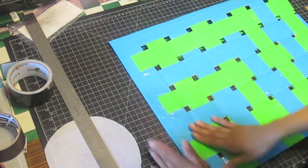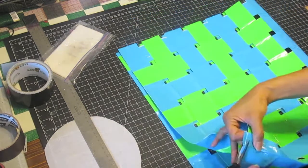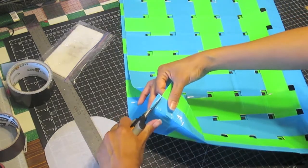Using detail scissors, trim off any excess tape at the top and bottom. Repeat steps for the right edge and when you are done, you will have the main part of your beach bag.